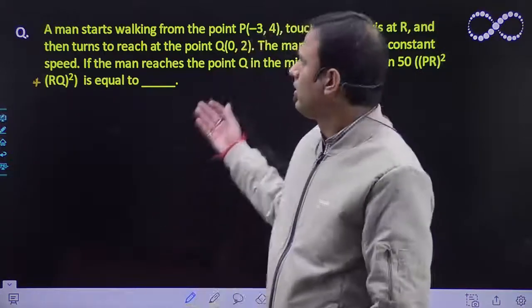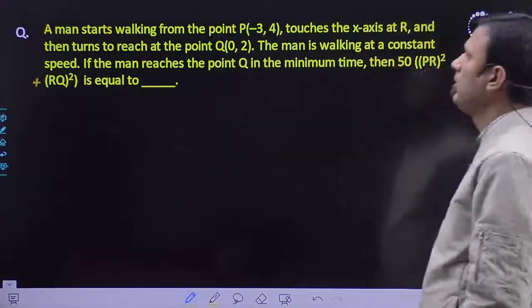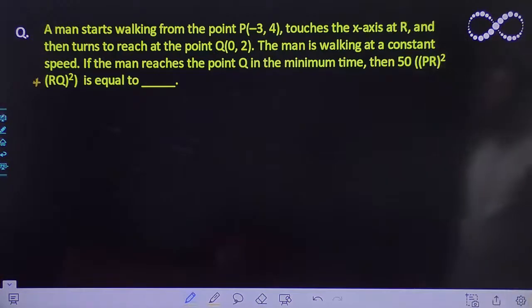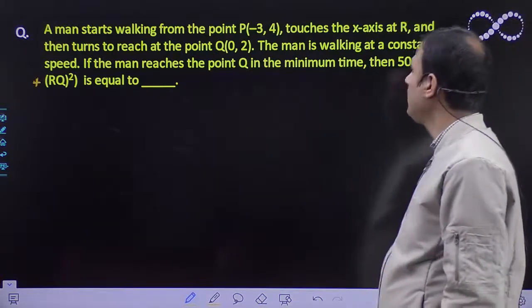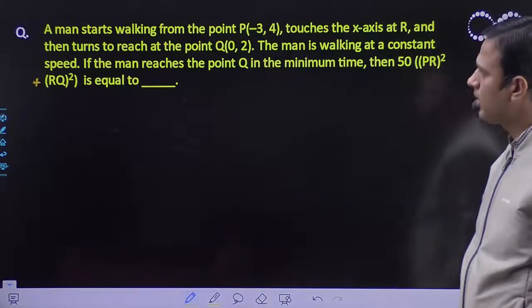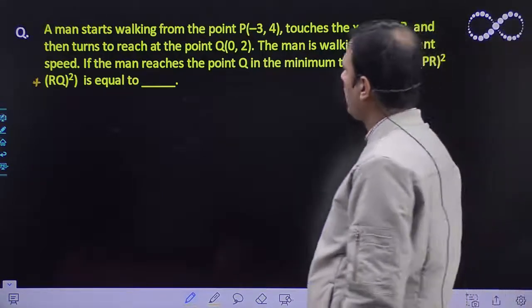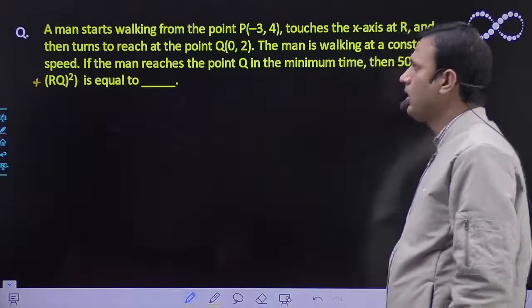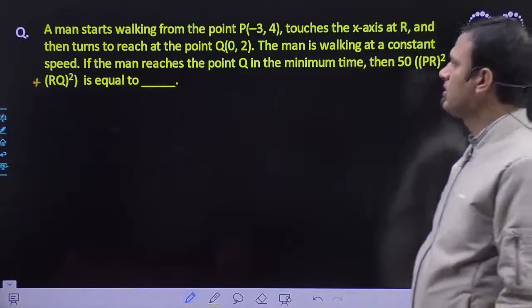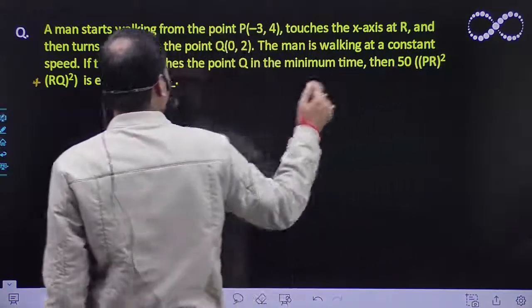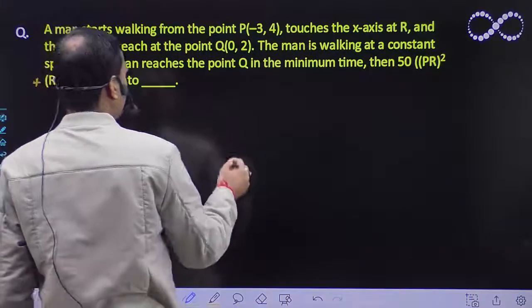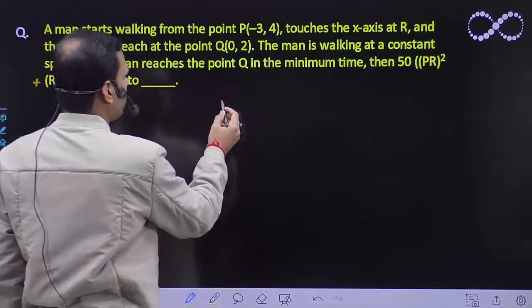Hello student, a man starts walking from the point P(-3, 4), touches the x-axis at R, and then turns to reach at the point Q(0, 2). The man is walking at a constant speed. If the man reaches the point Q in the minimum time, then 50 times (PR² + RQ²) is equal to... So we can see how to solve.